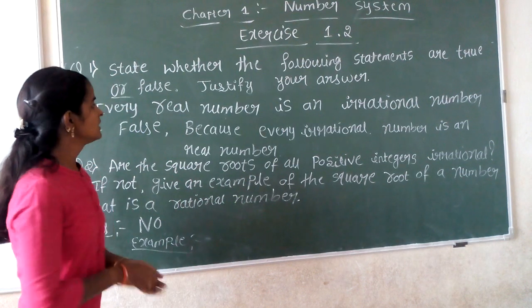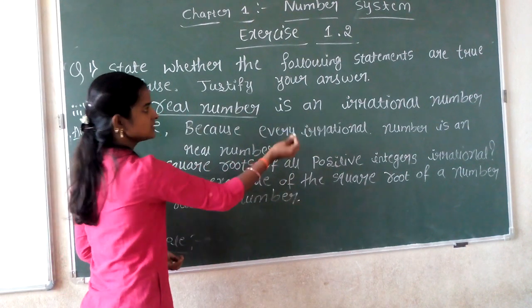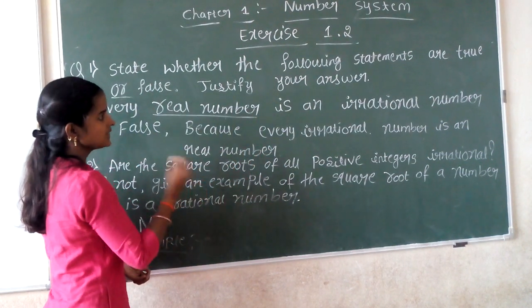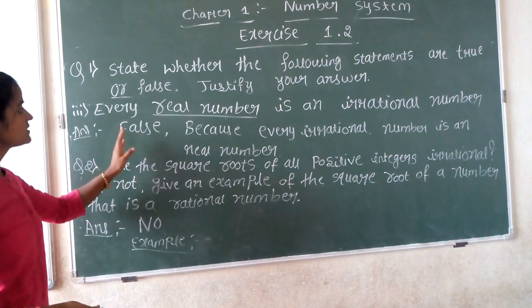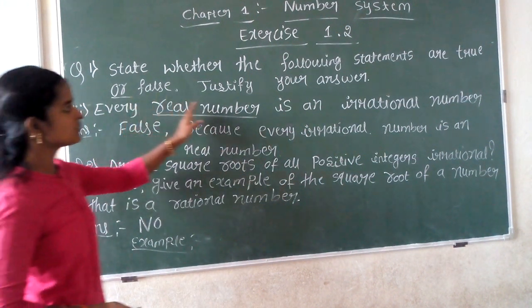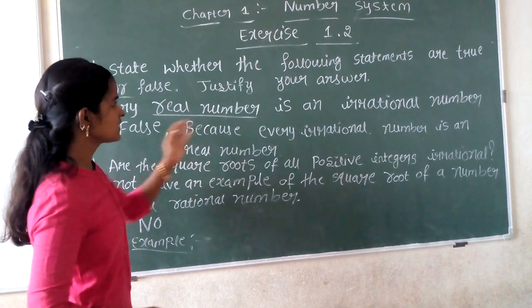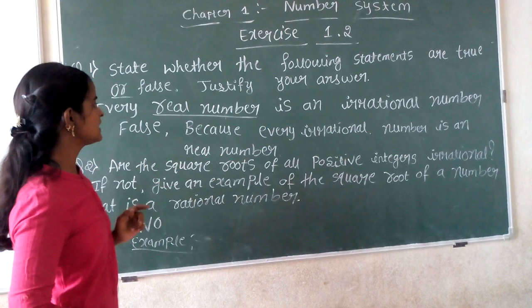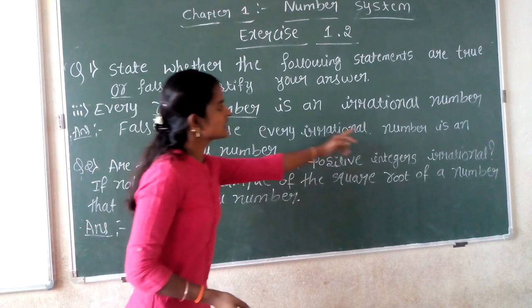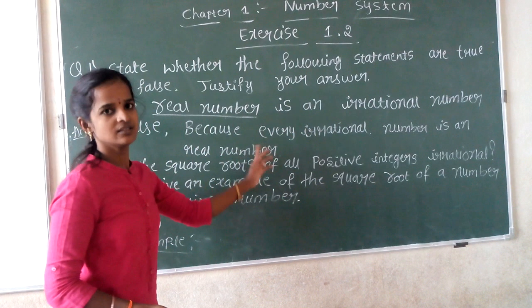The statement is false because every real number is not an irrational number. This statement is false because every irrational number is a real number, but not every real number is irrational.